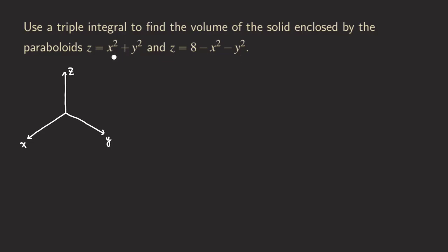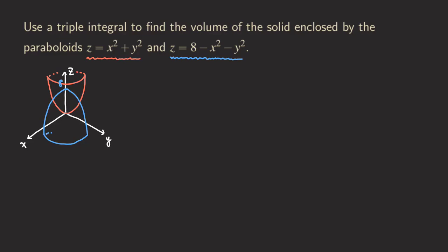The first thing we should do is graph each of those paraboloids. The first one is z equals x squared plus y squared, and as you can see it's going to open up because z is non-negative. The second one is z equals 8 minus x squared minus y squared. Both x squared and y squared have a negative sign, so it opens down. The 8 gives us the vertex at (0, 0, 8), and then it opens down — that's the other paraboloid.